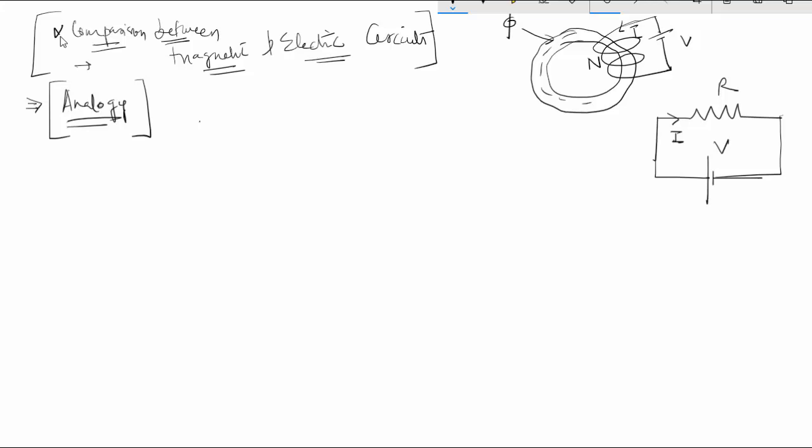So the MMF or the flux is given by phi and the unit is Weber, which is very similar to the current in the electrical circuits. So just saying this for the magnetics and this for the electrical. I is equal to the current and flux is given by the Weber unit.